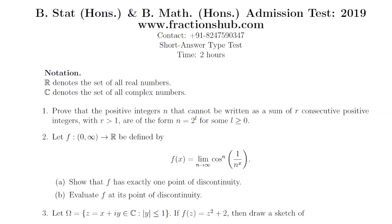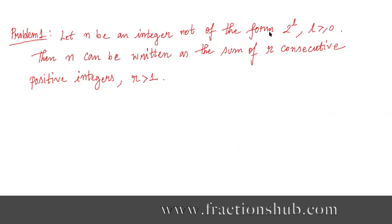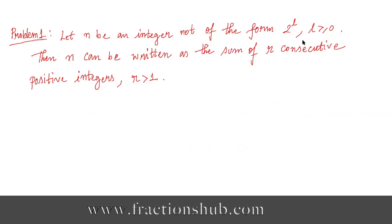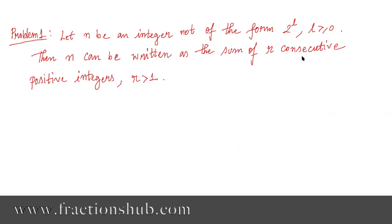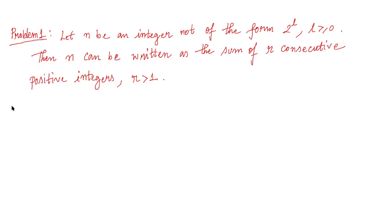So now, if we can prove that the numbers which are not of the form 2 to the power l — all those numbers — can be written as the sum of r consecutive positive integers, then we will be done. So here is the statement we are going to prove: where n is not of the form 2 to the power l, then we can write n as the sum of r consecutive positive integers where r is strictly greater than 1.